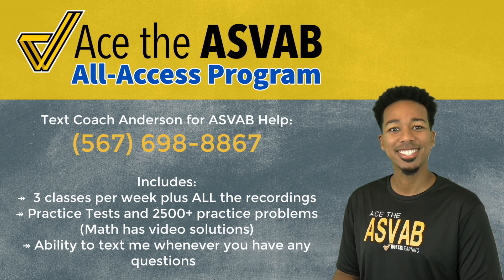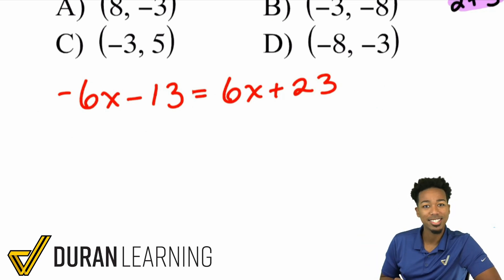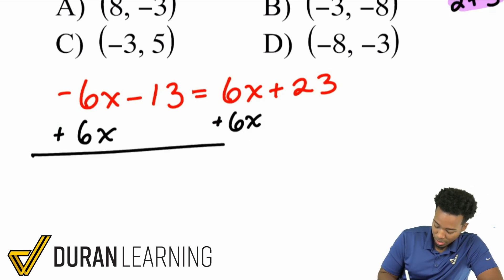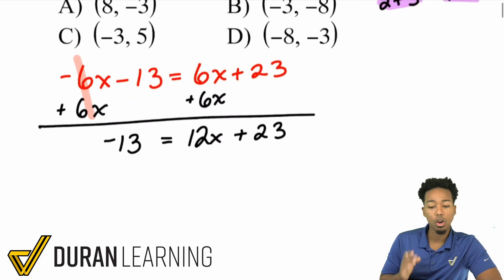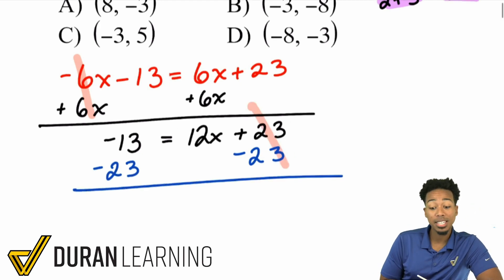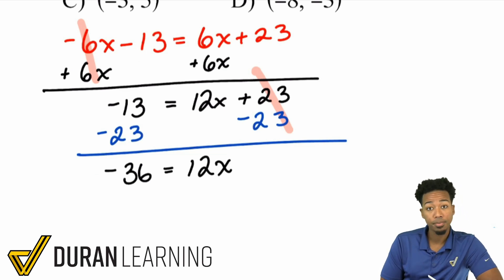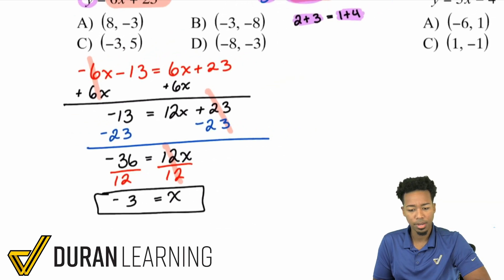So we have negative 6x minus 13 equals 6x plus 23. I'll add 6x to both sides to cancel it on the left, giving a positive 12x on the right. Bringing everything else down: negative 13 equals 12x plus 23. Then I subtract 23 from both sides — negative 13 minus 23 is negative 36 — so negative 36 equals 12x. Dividing both sides by 12 gives x equals negative 3.